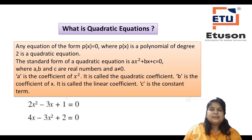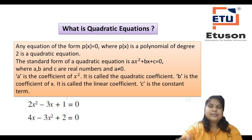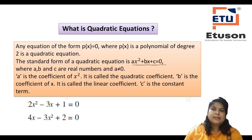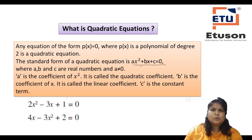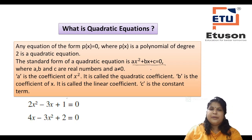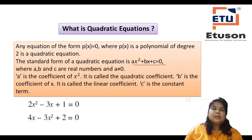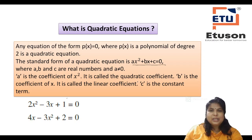The standard form of a quadratic equation is AX² + BX + C = 0, where A, B, and C are real numbers and A is not equal to 0. If A becomes 0, then the coefficient of X² becomes 0, and the AX² term vanishes, converting the equation into a linear equation in one variable. So always remember, A cannot be equal to 0. A is called the quadratic coefficient because it is the deciding factor — it is the coefficient of X².